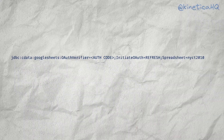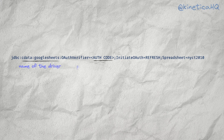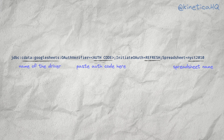The pattern for the connection string for a JDBC data source is as follows. First, you specify the name of the CData driver. After that, you set the OAuth verifier code that we generated just now. Initiate OAuth is set to refresh, and then we specify the name of the spreadsheet we would like to connect to, which is NYCT 2010. Note that the CData connection string is specific to each spreadsheet, meaning we will have to create separate data sources for different Google spreadsheets that we might want to use.